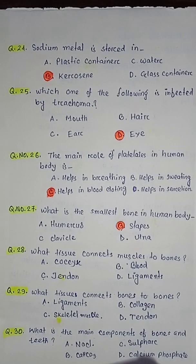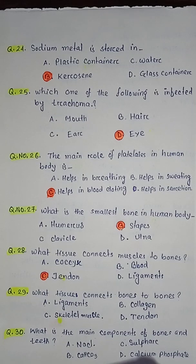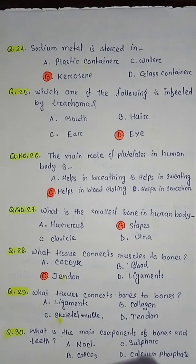Question number twenty-eight: what tissue connects muscles to bones — option A coccyx, option B blood, option C tendon, option D ligaments. So the correct answer is option C tendon. Question number twenty-nine: what tissue connects bones to bones — option A ligaments, option B collagen, option C skeletal muscle, option D tendon. So the correct answer is option A ligaments.